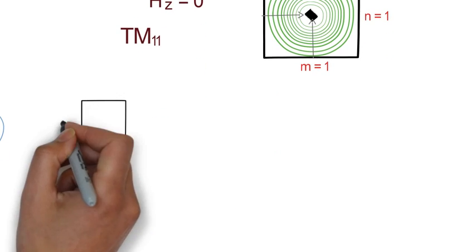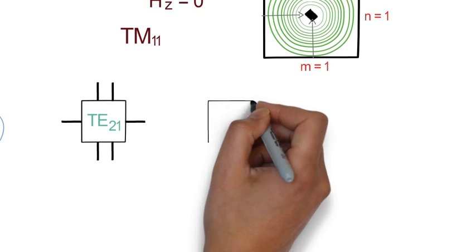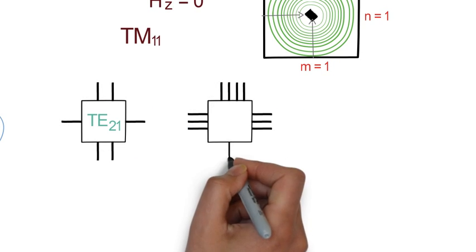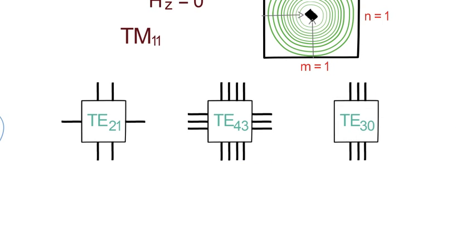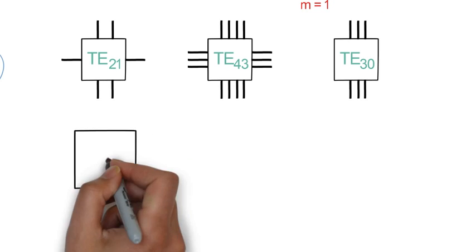Here are some examples of different feed combinations for transverse electric mode. Let's see some examples for transverse magnetic mode also.